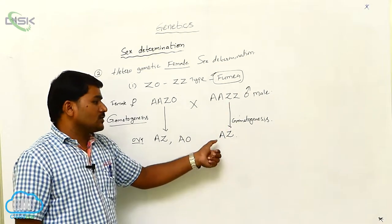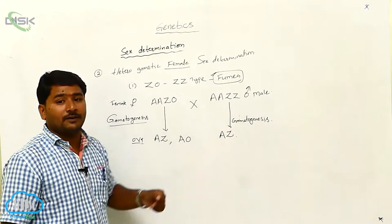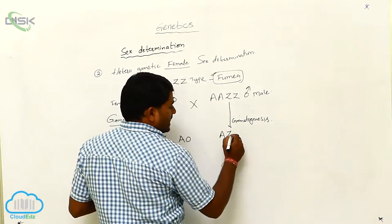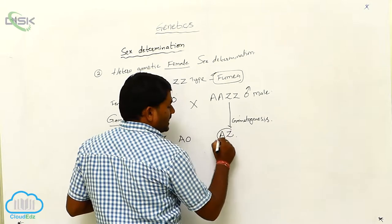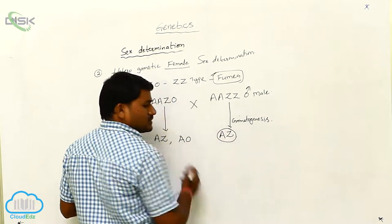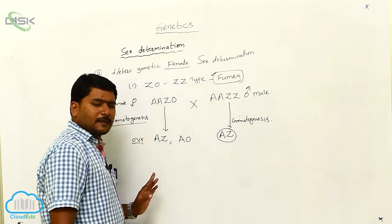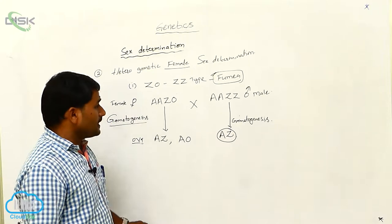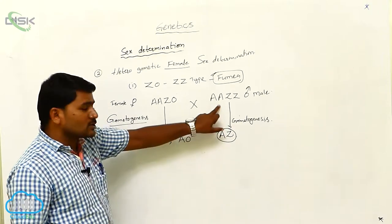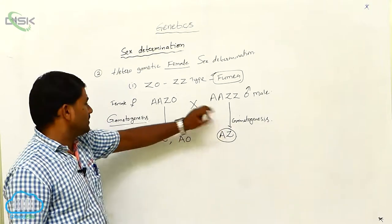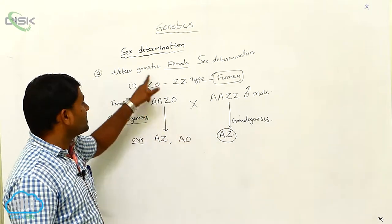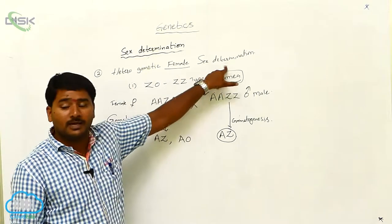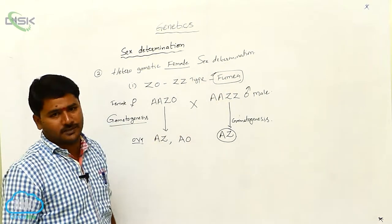Males produce one type of gamete, meaning all sperms have only AZ chromosomes. Because sperms are the same type, the male is homogametic and the female is heterogametic. Hence this is called heterogametic female sex determination.